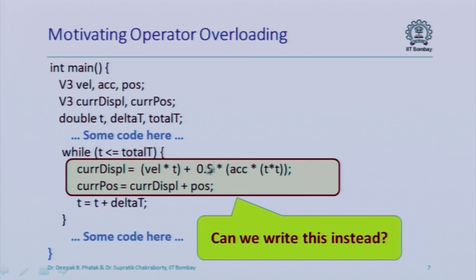So it would be really nice if I could just write velocity times t plus half of acceleration times t squared. But the problem here is that the plus we usually know of operates only on integers, floats, or doubles.